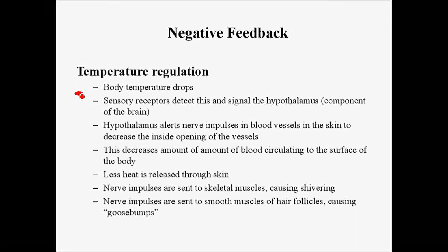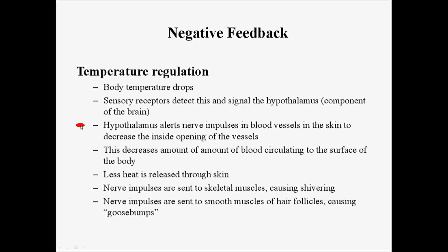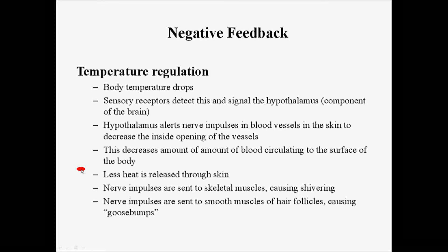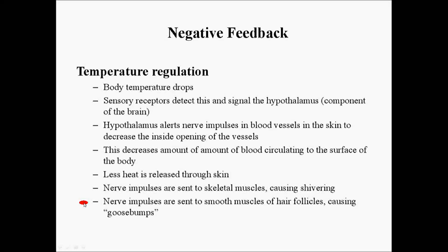An example is temperature regulation. If body temperature drops, sensory receptors detect this and send a signal to the hypothalamus in the brain. The hypothalamus sends signals through the nerves to blood vessels in the skin to vasoconstrict — that is, to decrease the size of their internal openings. This causes less blood to circulate to the surface of the body, so less heat is released through the skin. A second response is that nerve impulses are sent to skeletal muscles, causing them to move and produce shivering, which generates heat. Additionally, nerve impulses sent to smooth muscles of the hair follicles cause goosebumps.